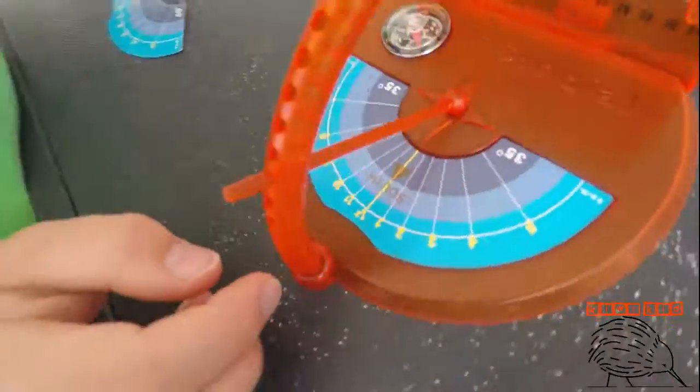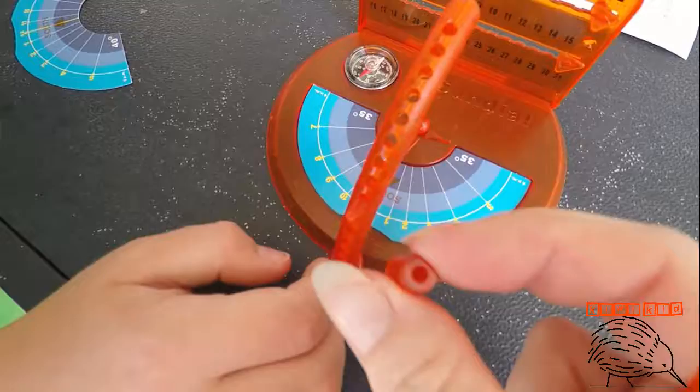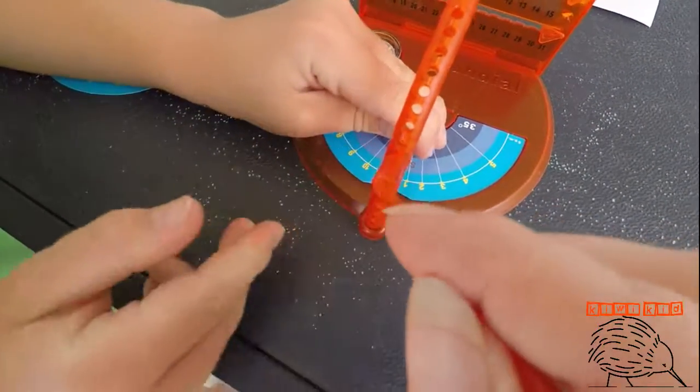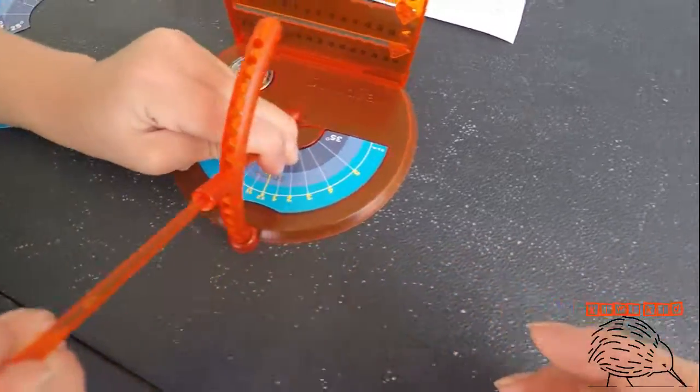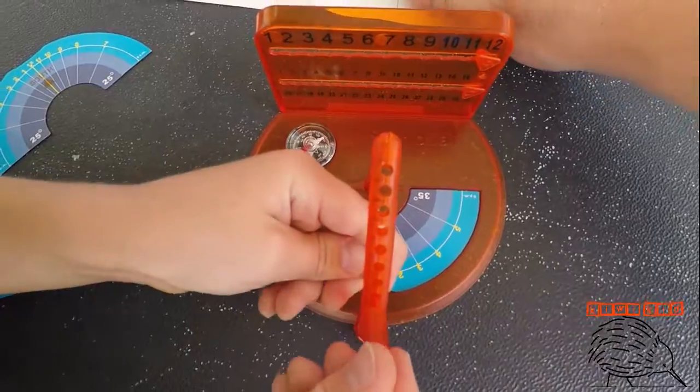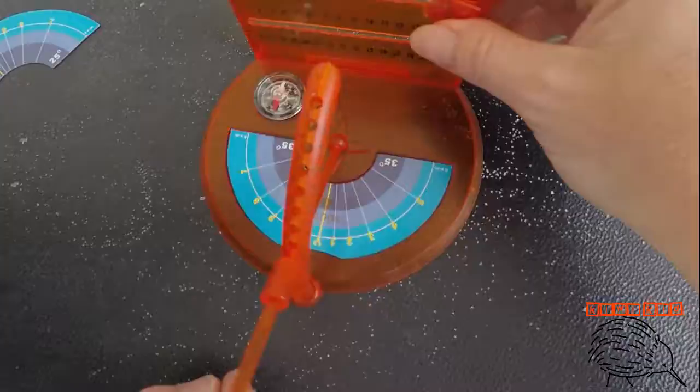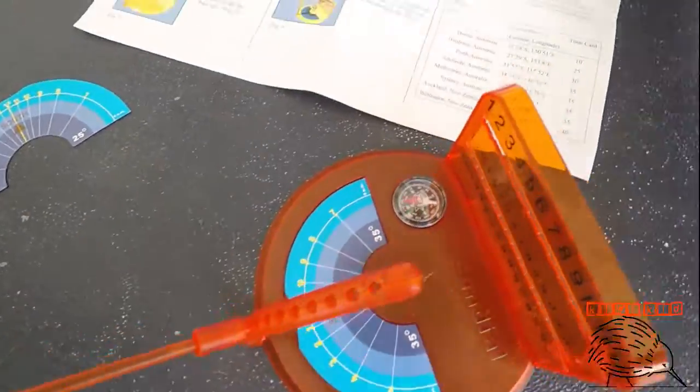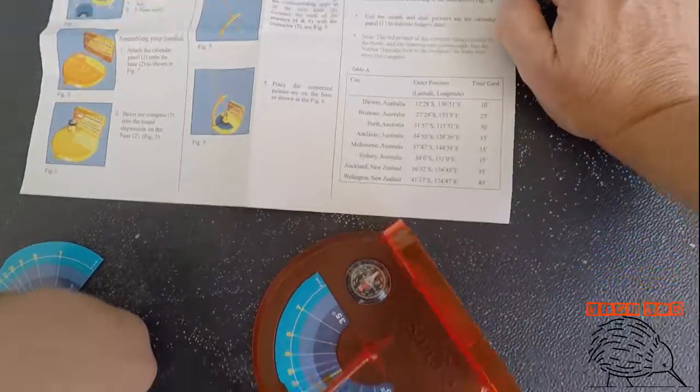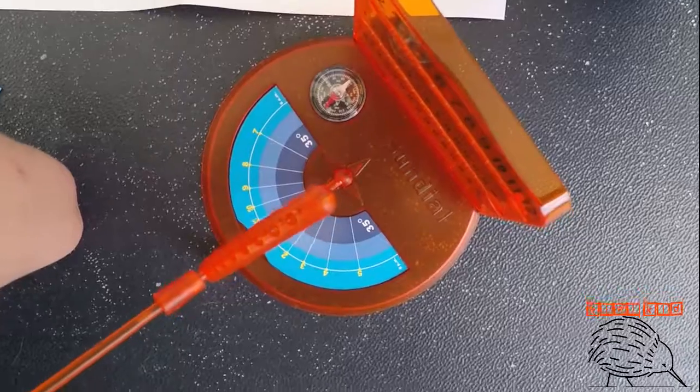That's got attached like so, and then this is where this part comes in. You're going to put that on there, so that's used by the shadow. Now that we've done that, place the connected pointer on the base as shown.